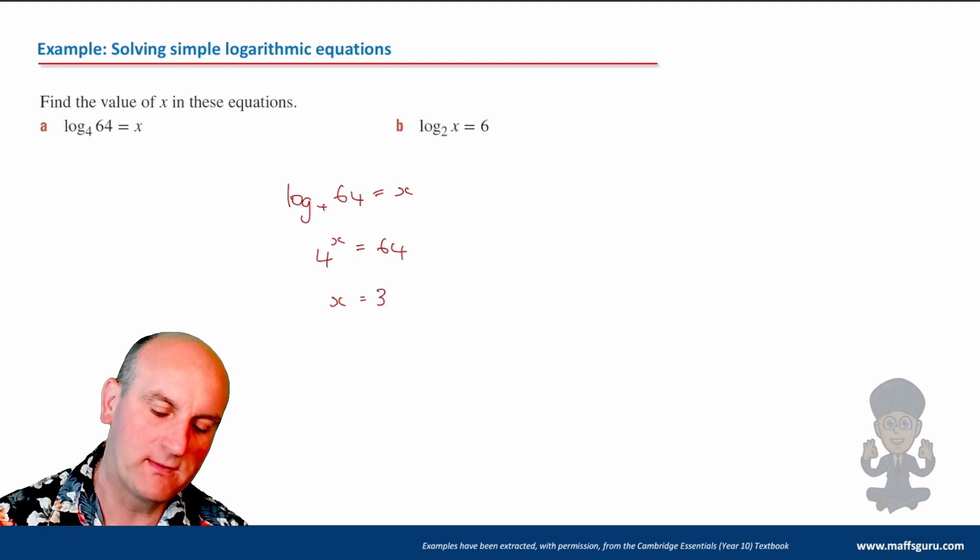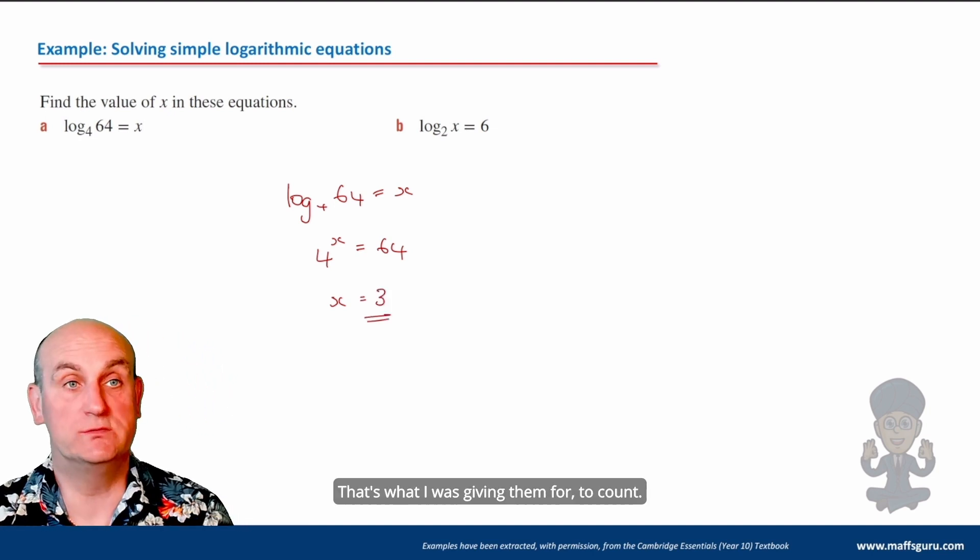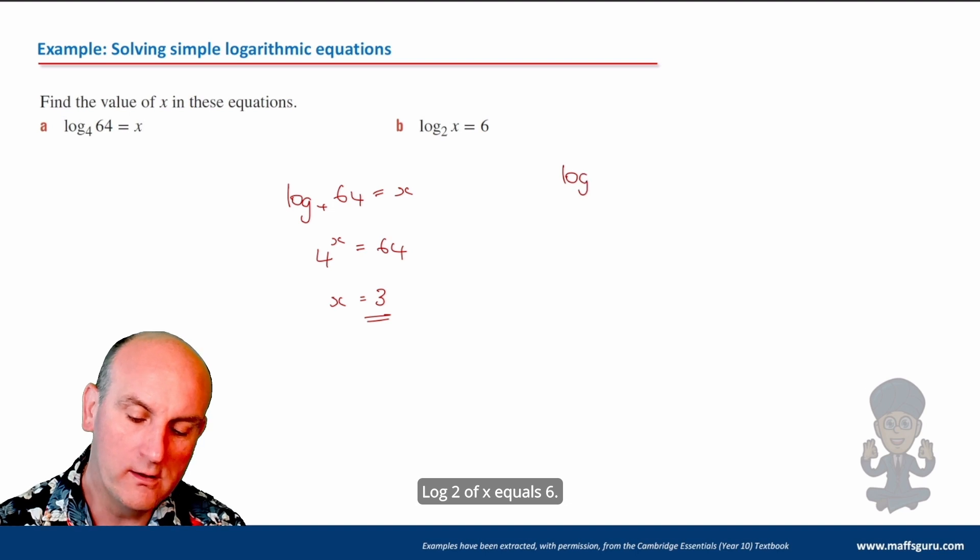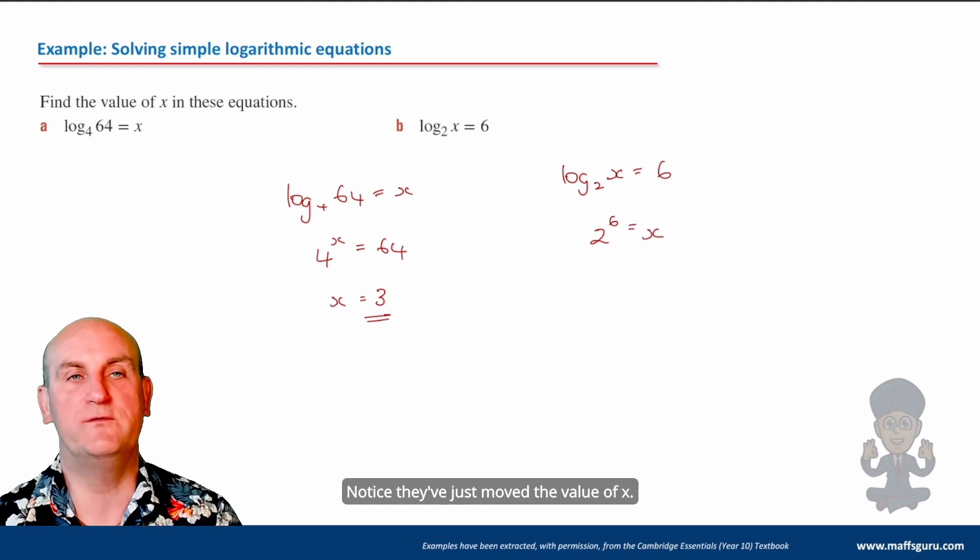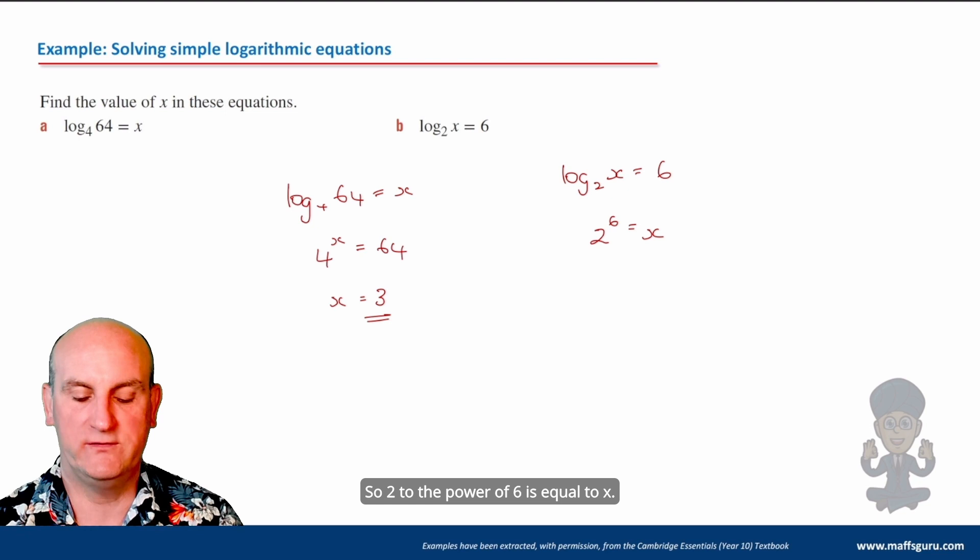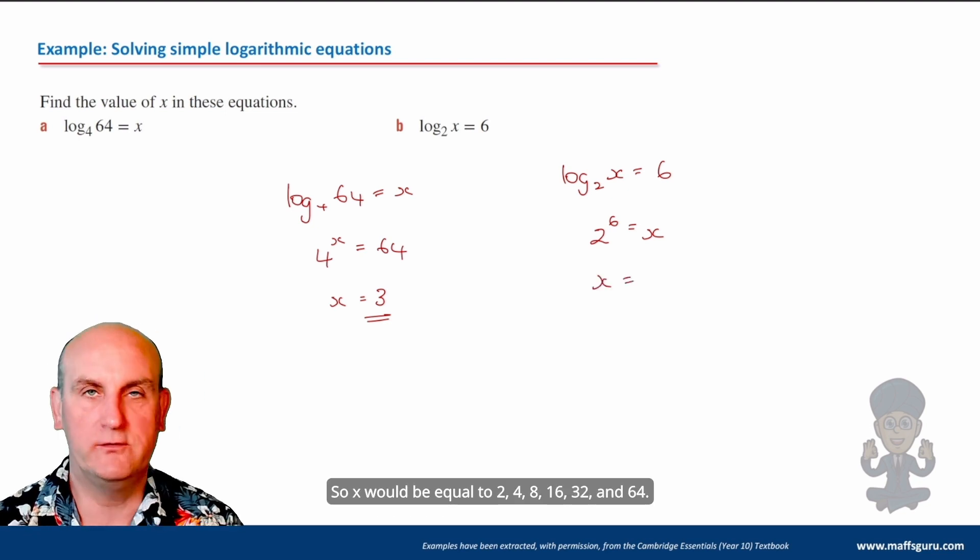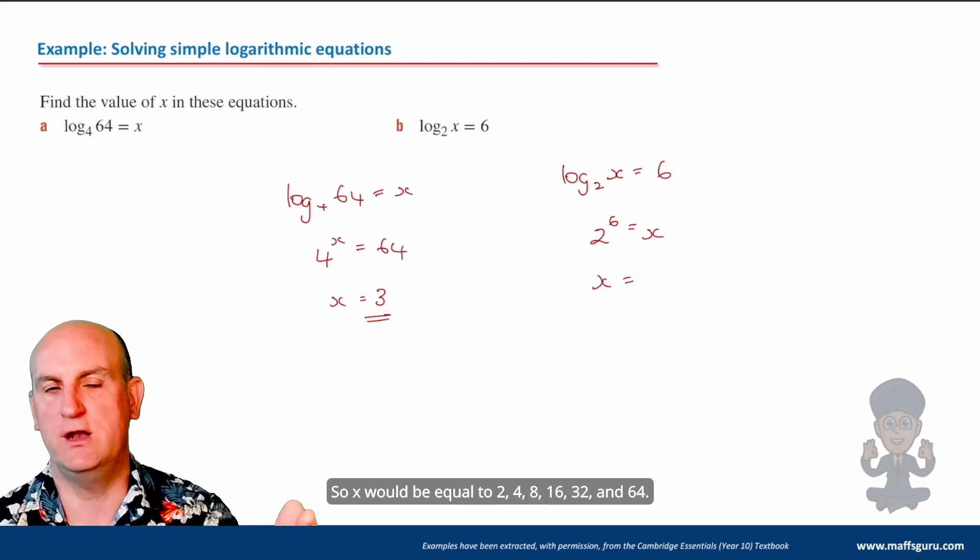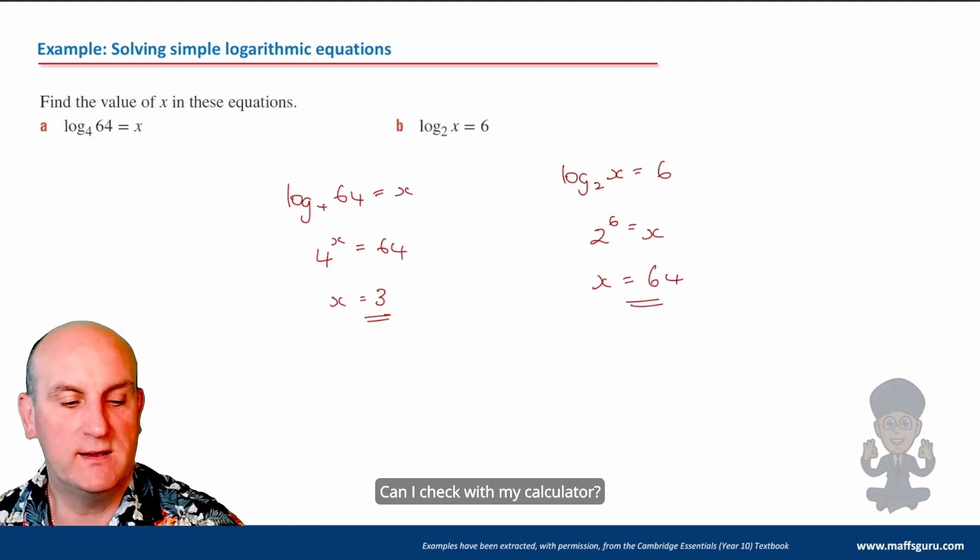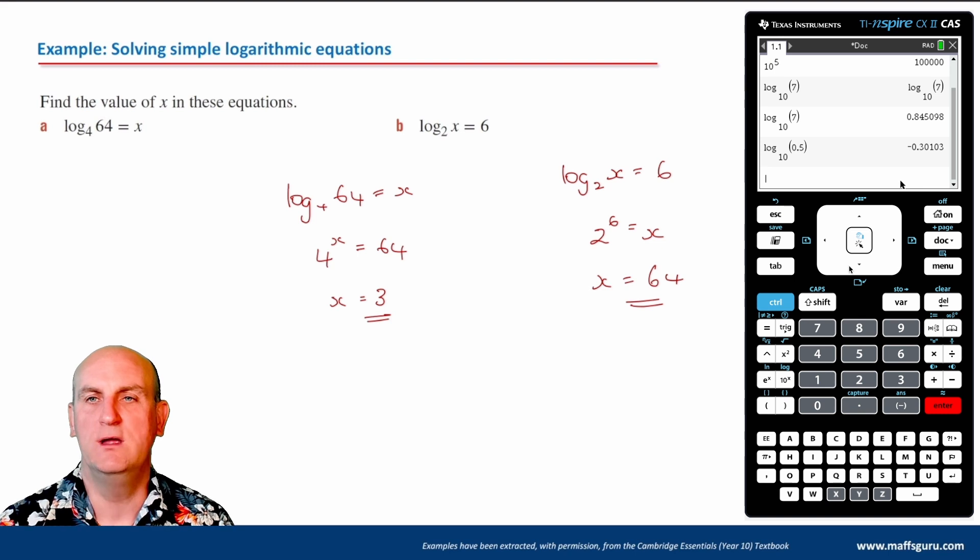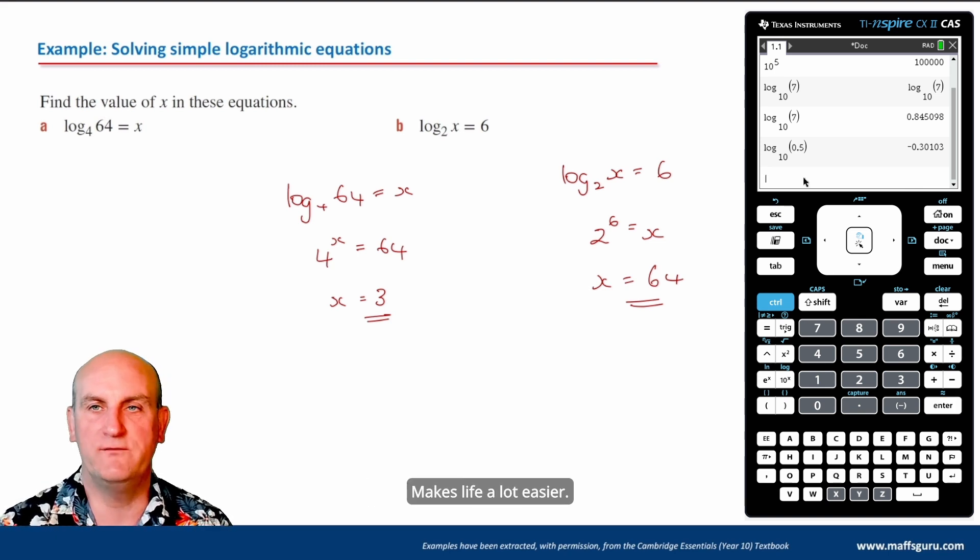I'm using my fingers. That's what I was given them for to count. What about this one? Log 2 of x equals 6. So 2 to the power of 6 is equal to x. Notice they've just moved the value of x. So x would be equal to 2, 4, 8, 16, 32 and 64. Can I check with my calculator? That's what it's there for. I like checking my calculator. It makes life a lot easier.